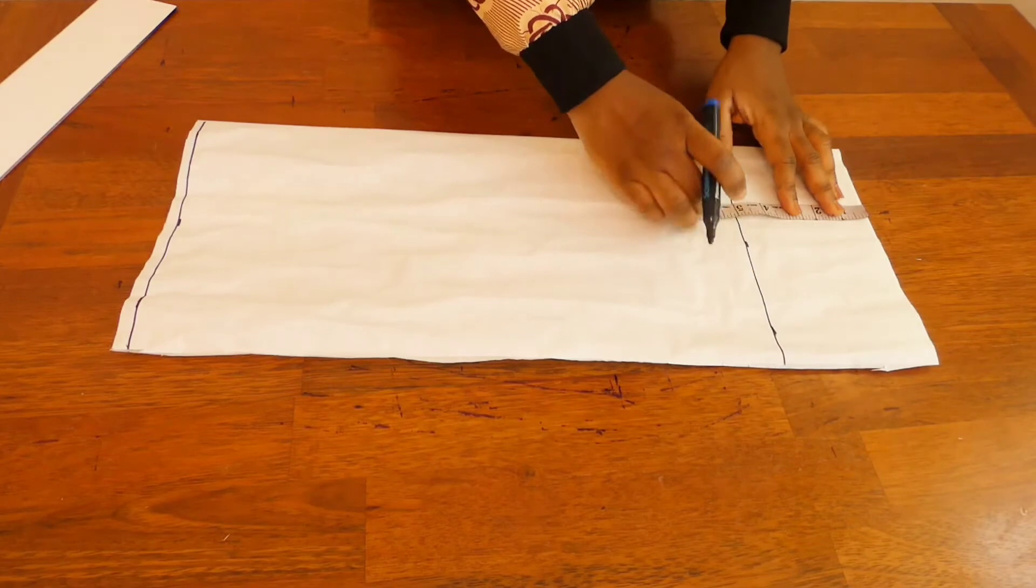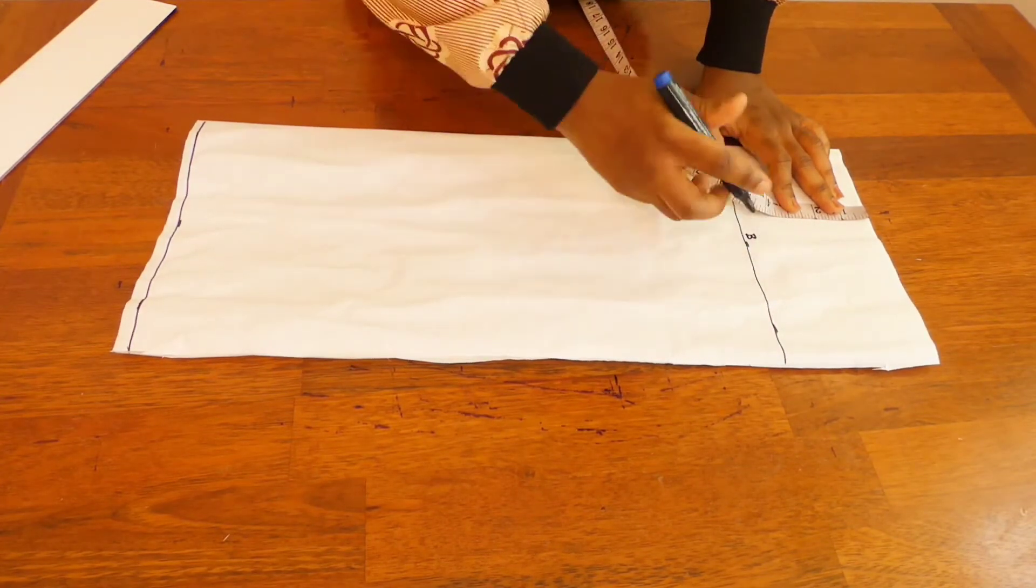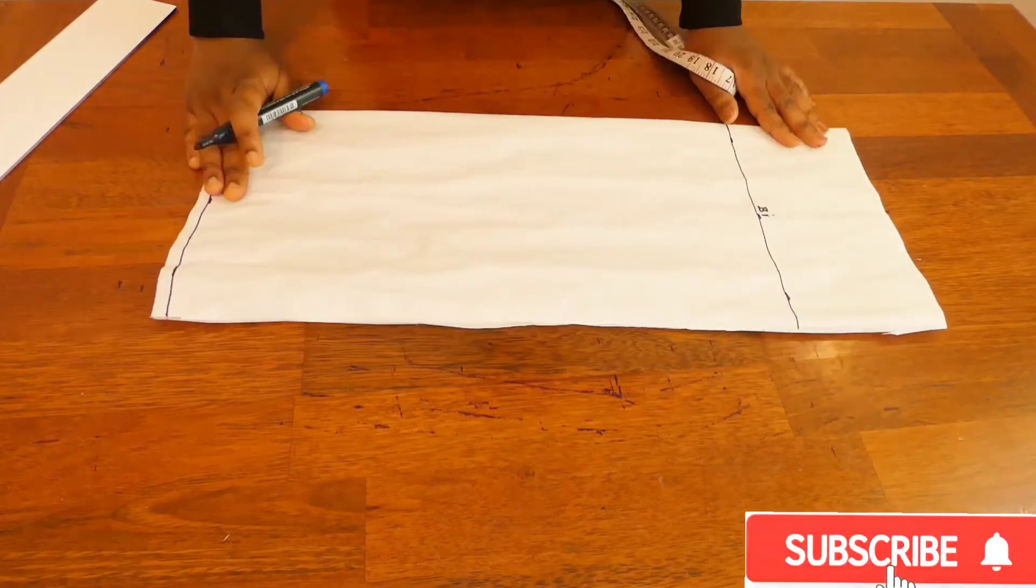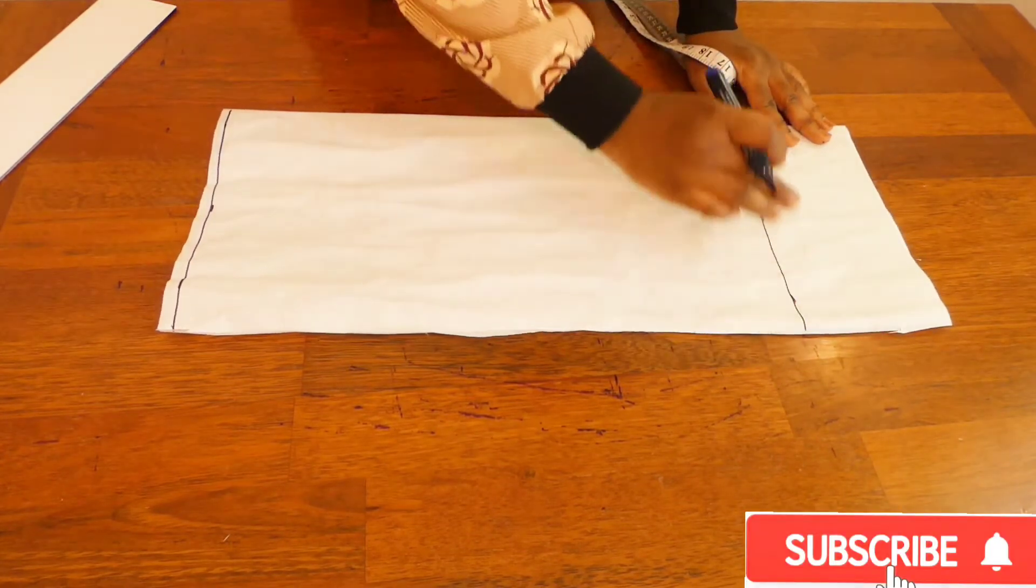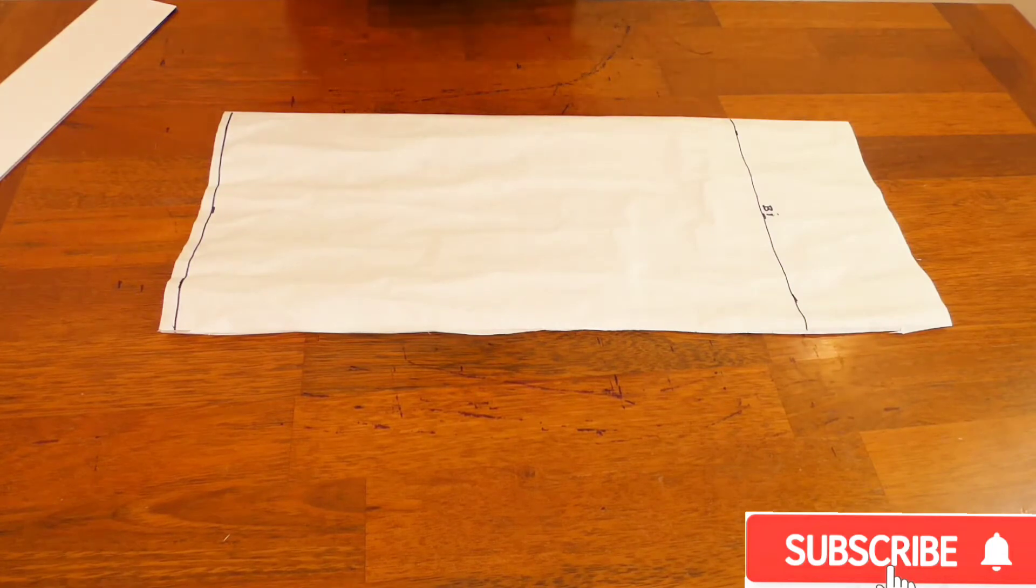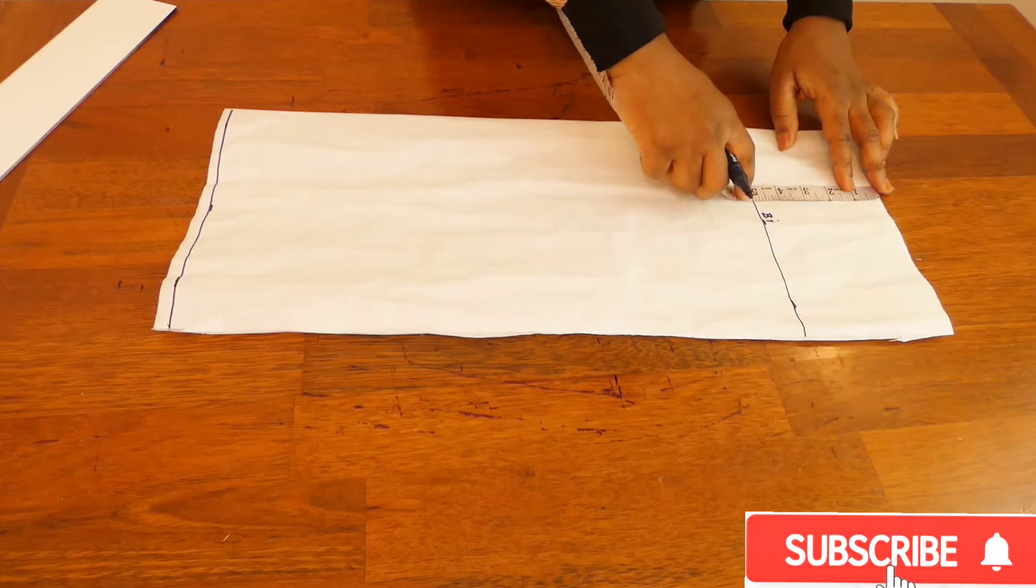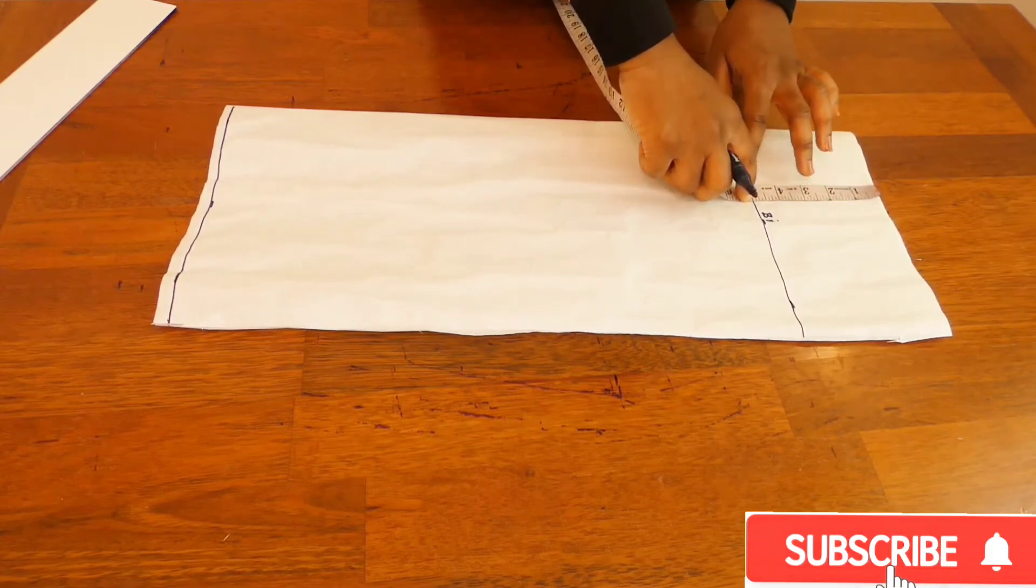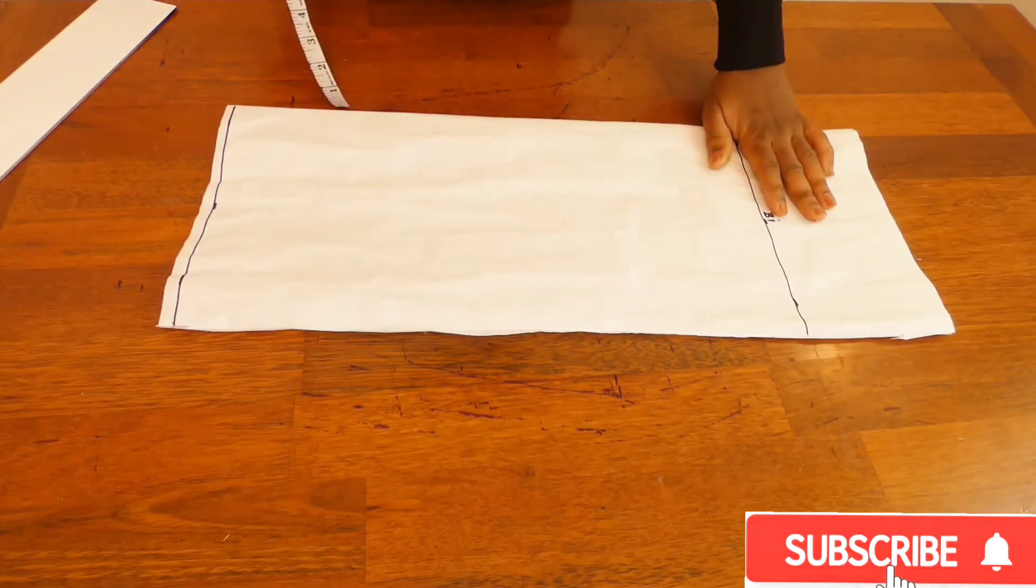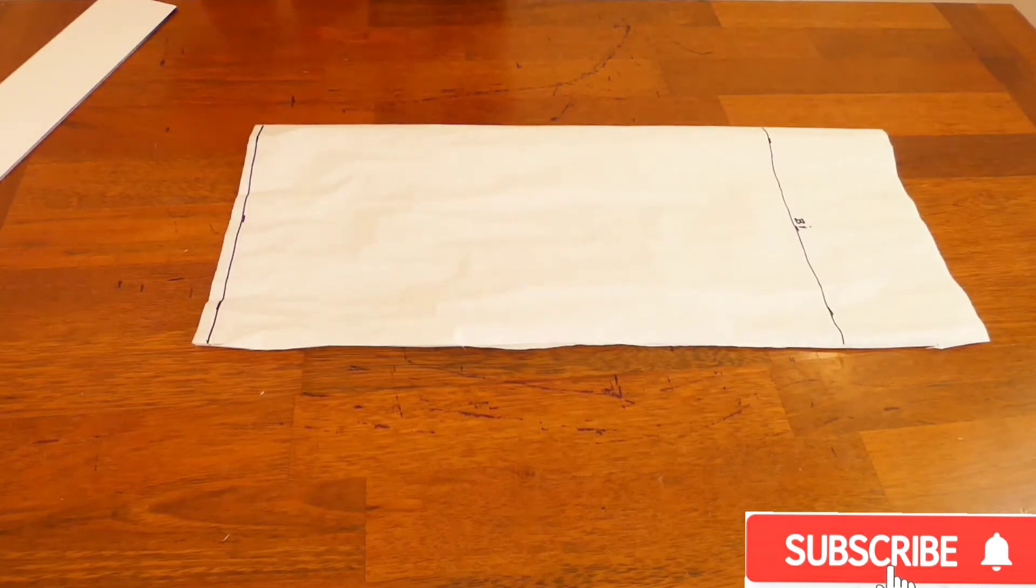So this line will be the bicep line, so I'll just be labeling it B or BI. We have our bicep already marked out. To get our bicep I use a standard measurement of five inches which is actually measured from the tip to where five inches is located, and I'll label my bicep. I already have the full length here.